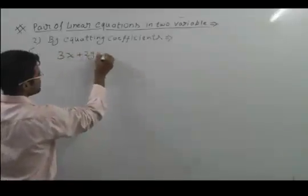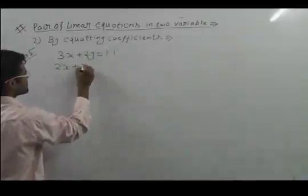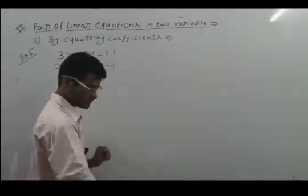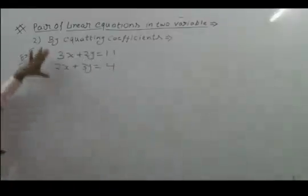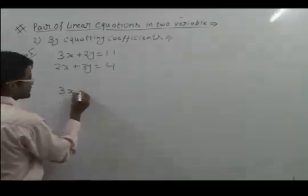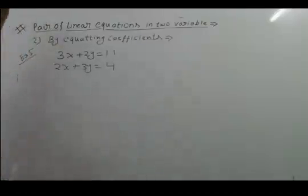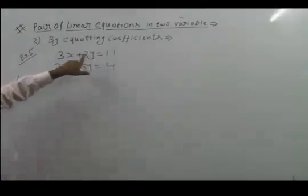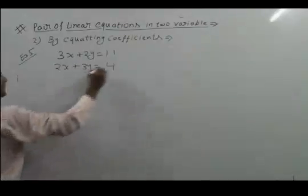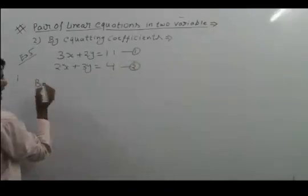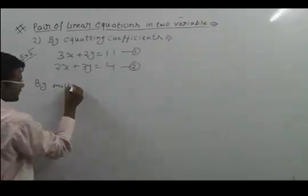The example: 3x plus 2y is equal to 11, and 2x plus 3y is equal to 4. We have to solve this system. Write down these equations — first, make the coefficients equal. Here x coefficient is 3, there it is 2; y coefficient is 2 here and y coefficient is 3 there — not equal. This is equation number 1, this is equation number 2.